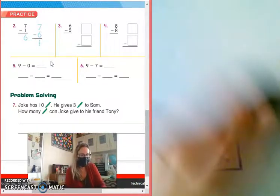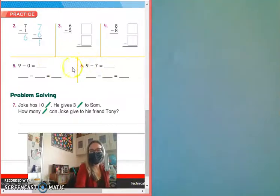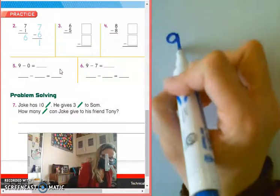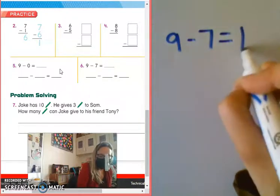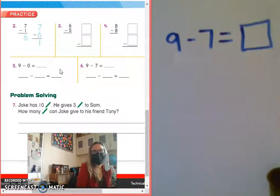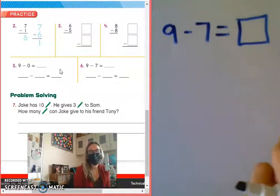Okay? So now let's take a look at number six right here. It says 9 take away 7. So what you're going to do is figure out whatever way is easiest for you to subtract. Some of us like to use cubes, some of us like to use 10 frames, some of us like to draw. Noah, you're going to put those away right now because you need to be paying attention to the board.